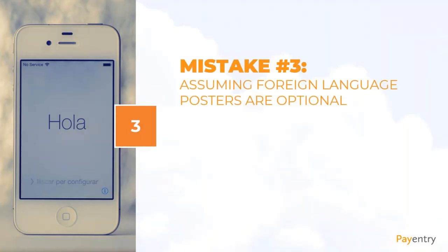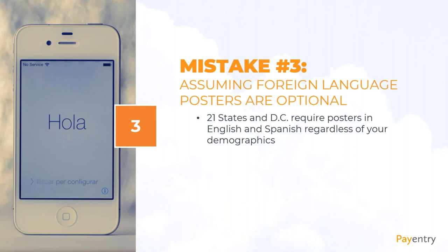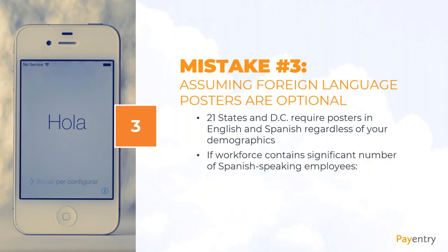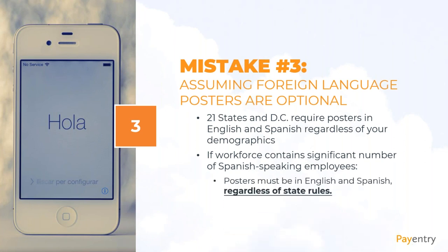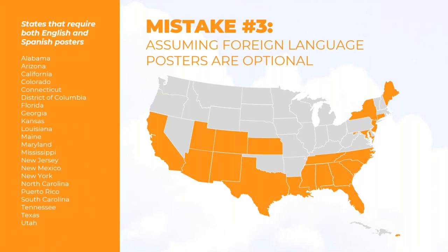Mistake number three is assuming that foreign language posters are optional. There are 21 states and the District of Columbia that require posters in both English and Spanish regardless of your demographics. If your workforce contains a significant number of Spanish-speaking employees, posters must be in English and Spanish regardless of what state you're in. There is a listing of states that currently require both English and Spanish posters, and it never hurts to post it even if your state doesn't require it.